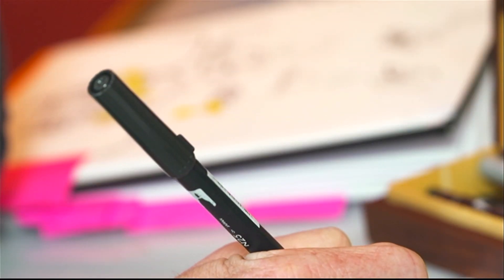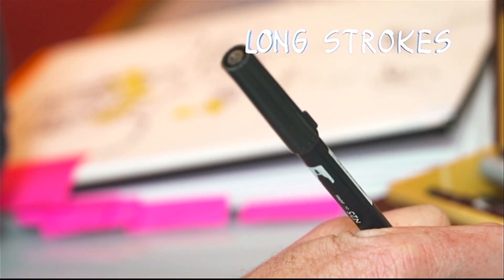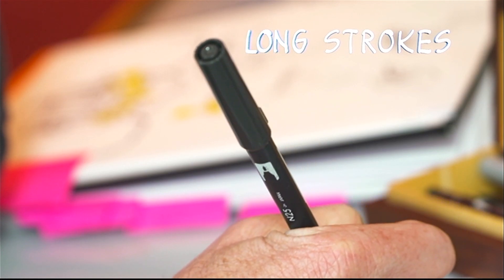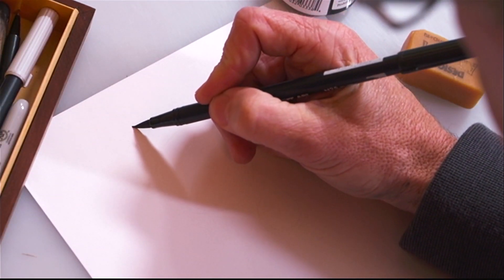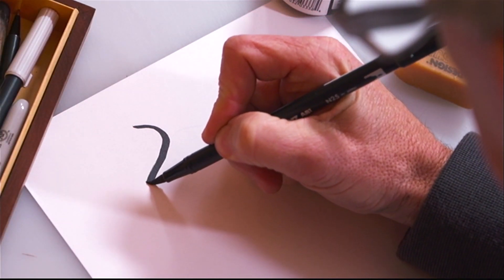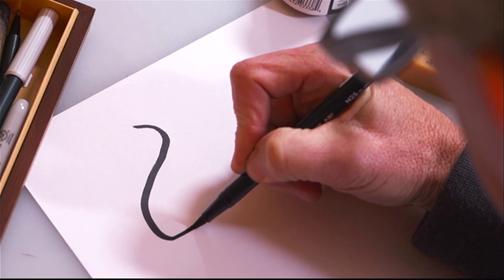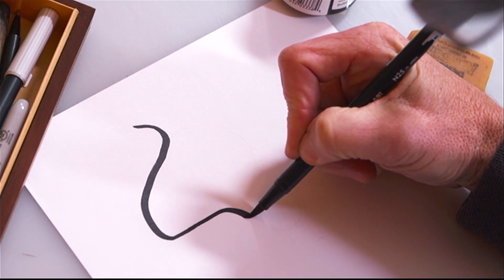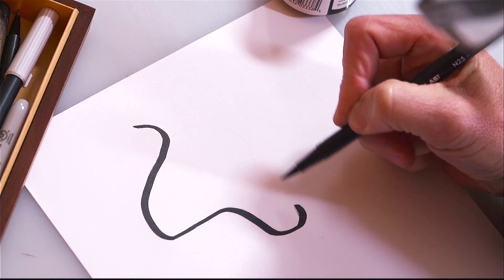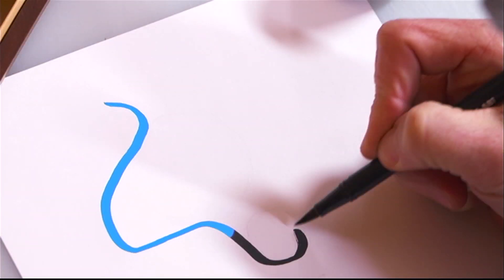The secret to drawing Woodstock is to use long, continuous strokes. I start at the very top feather and come down around his beak. And remember that Woodstock has a very big head, about twice the size of his body. Don't be shy with your pen, be bold, just like Woodstock.